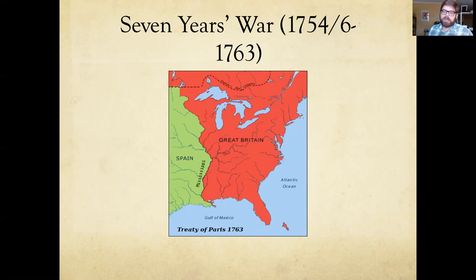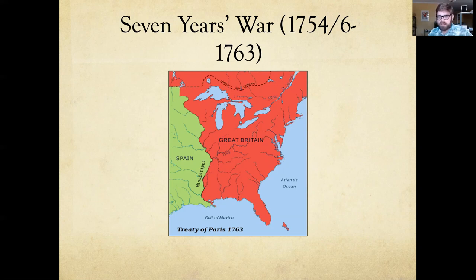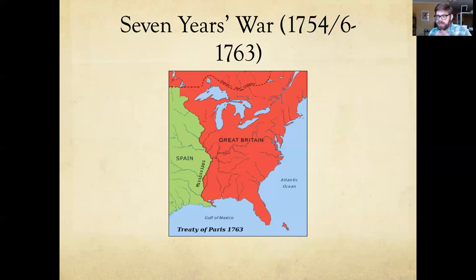To start, we need to think about the situation among American colonists and European powers before the American Revolution. Throughout the 1700s, white colonists in North America, especially British colonists, have been looking to push westward from the Atlantic coast toward the interior of the continent in search of more land. This land is held by indigenous powers — Native American nations. Great Britain is trying to prevent them from expanding for fear of fighting costly wars with powerful Native American groups. At the same time, Britain is also in conflict with the French, Spanish, and other European powers over the future of North America.